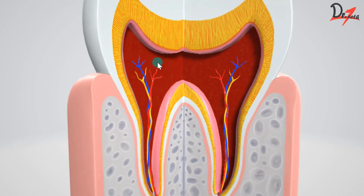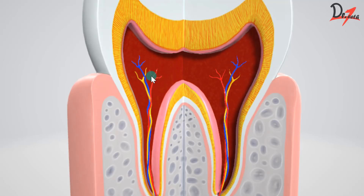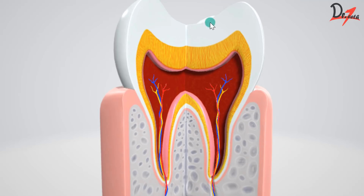This pulp can be divided into two parts. The pulp above the CEJ — the cemento-enamel junction — is the coronal pulp, because it is in the crown. The pulp which is in the root is called the radicular pulp. The entire space or chamber is called the pulp chamber. If you look at the shape of this pulp, we can see that it follows the shape of the tooth.